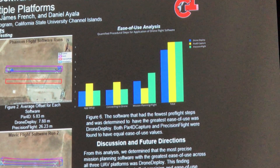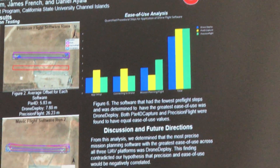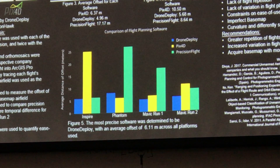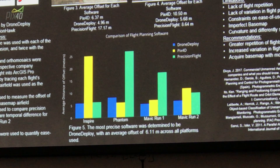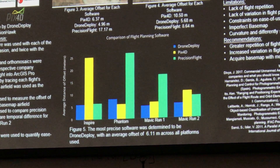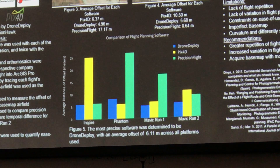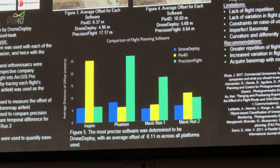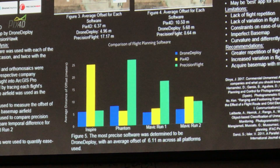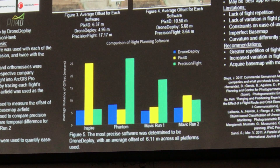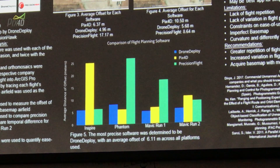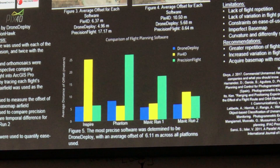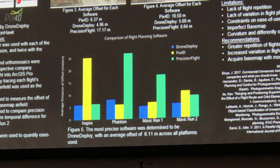Overall, we found that the Drone Deploy software was both the most precise in its flight plan image capturing and also the easiest to use. This contradicted our hypothesis — we thought that apps that were more precise would be harder to use, would have more steps, and require more setup. We thought this was pretty interesting. A few reasons this could be caused by include the fact that Drone Deploy had a higher version number, so it may be more refined, and it may just be the best flight app for this simple flight plan — just a basic run over this one airstrip.